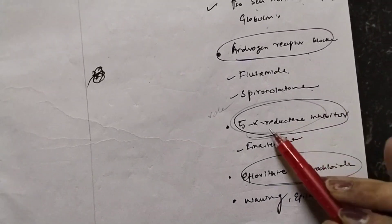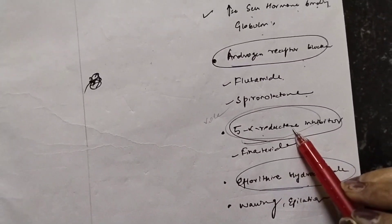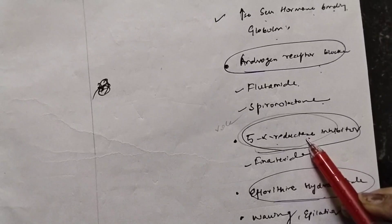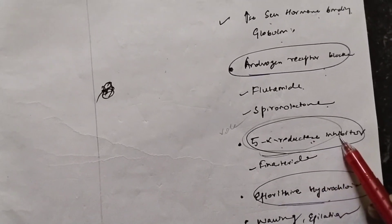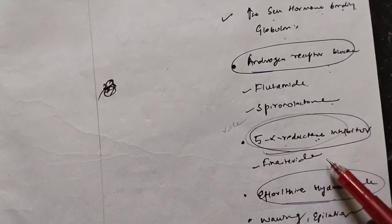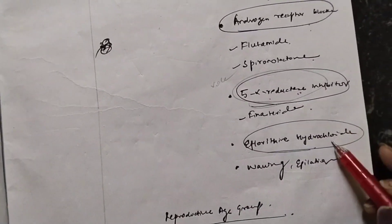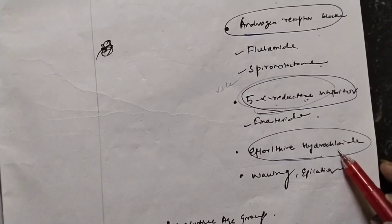You give 5-alpha reductase inhibitor because we know that 5-alpha reductase converts testosterone into dihydrotestosterone. So we will give 5-alpha reductase inhibitor so that this dihydrotestosterone is not formed and the male sexual characters are not manifested. Here we have finasteride and also eflornithine hydrochloride.